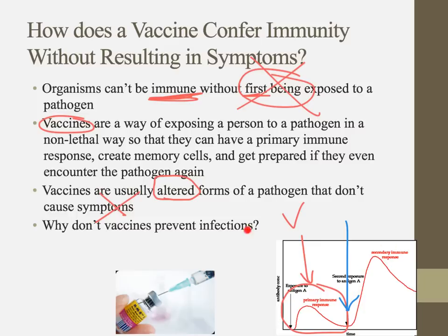Vaccines don't prevent infections — you don't have some kind of magical chickenpox shield. What they do is make sure you already have those memory cells from the primary immune response so that any time you're exposed to that virus again, you can produce antibodies without experiencing any symptoms.